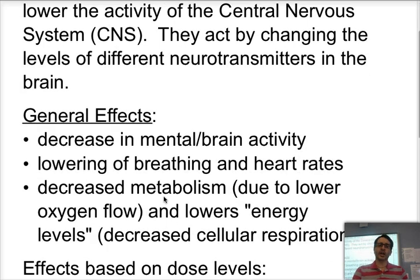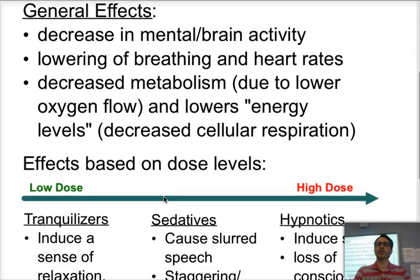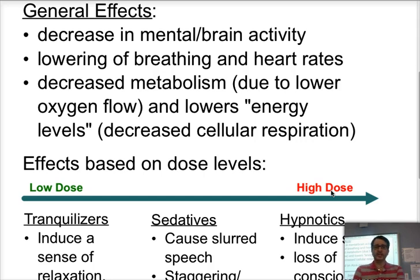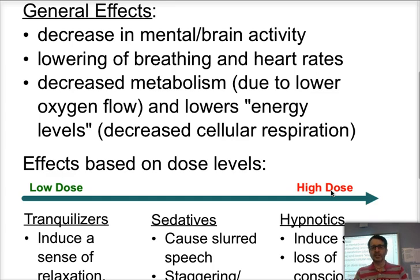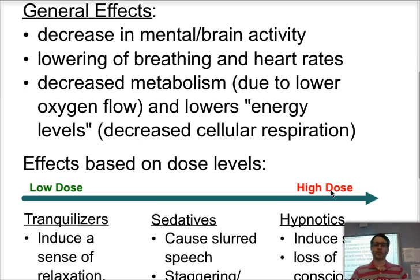Some of the general effects that depressants have is that they are going to decrease mental or brain activity. In addition, they will cause a lowering in the breathing and the heart rates by acting on the brain. And they will cause a decreased metabolism due to the lower intake of oxygen, so if there's less oxygen going into the blood, we are going to slow down our energy production because we're going to have lower cellular respiration.